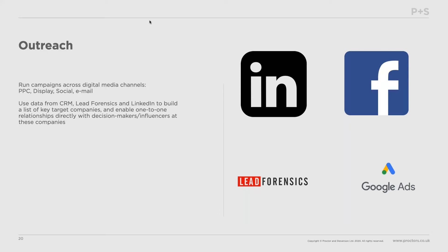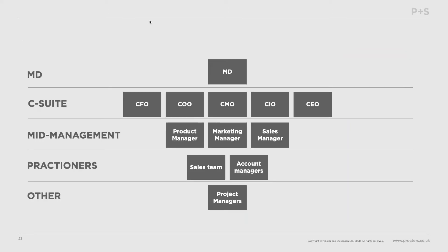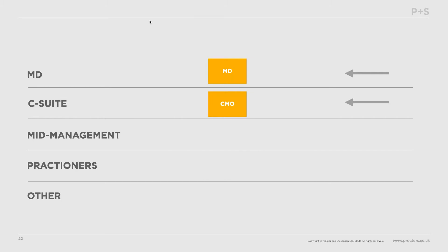This enables one-to-one relationships directly with decision makers and influencers at those companies. How do we get to those decision makers? Typically you have a skeleton diagram of an organisation, and when you traditionally start a marketing campaign you might think these are the two most important people I really want to focus on — maybe the MD and the CMO. But if you go for just those two people you're literally narrowing the net down to two, which gives you a huge failure rate.